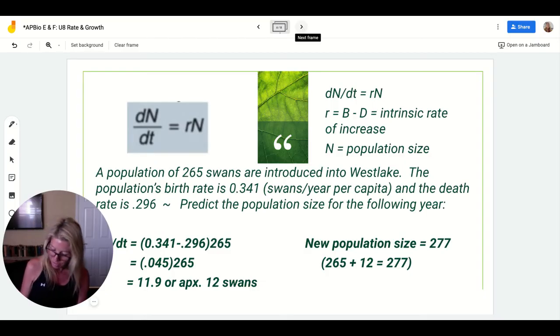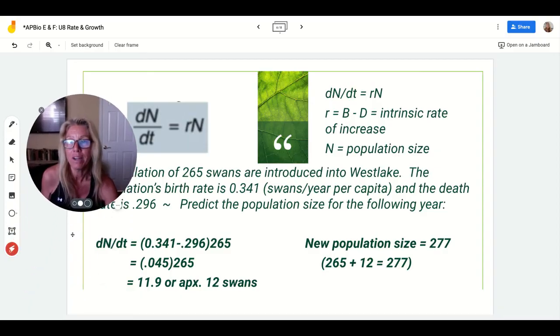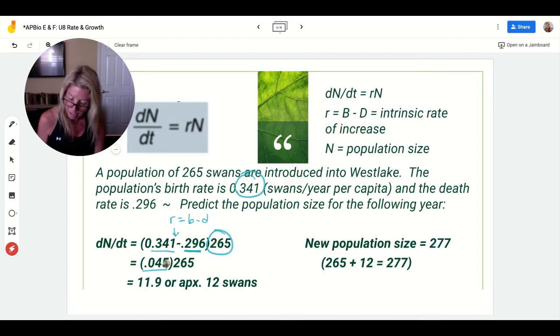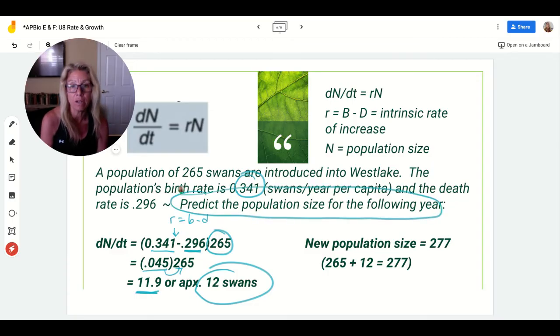In order to do this one, I looked at that change in population over time. I took 0.341, which was the birth rate, and I subtracted off the death rate, because this right here is equal to r, and r equals the birth rate minus the death rate. I multiplied it by the population size of 265. When I did birth minus death, that's 0.045 times 265, which gave me 11.9 or approximately 12 swans. But what did the question actually ask? It said predict the population size on the following year. So it's going to change by 12 swans. I'm at 265, that was my N, and then my change will give me 12 more for a total of 277.